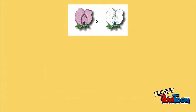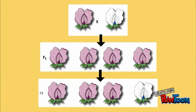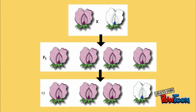When Mendel took a purple flower plant and crossed it with a white flower plant, all of the offspring had purple flowers. When he bred two of these offspring with one another, most of their offspring were purple. However, there were a few white flower plants as well.